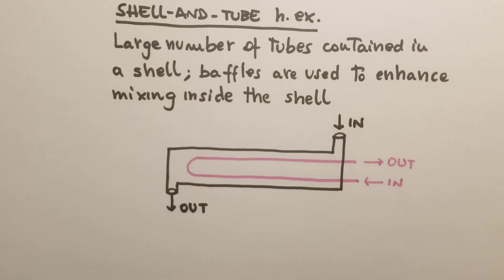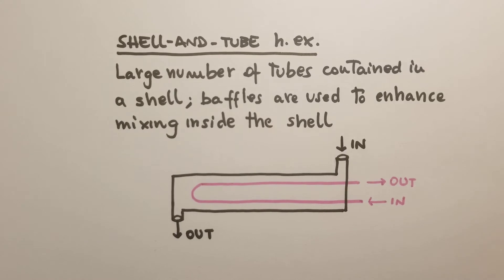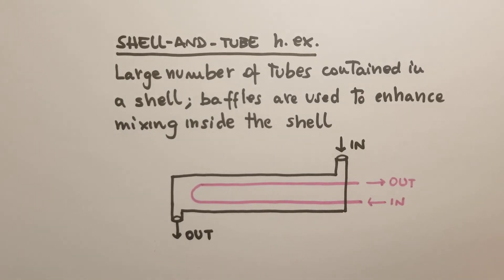The popular heat exchanger that we're going to study is the shell and tube heat exchanger. In this design, a large number of tubes are contained in a shell, and baffles are used inside the shell to enhance the mixing and therefore the heat exchange. This is one of the most simple cases where we have a fluid flowing in and out of the shell and the other fluid flowing inside the tube, doing one passage.